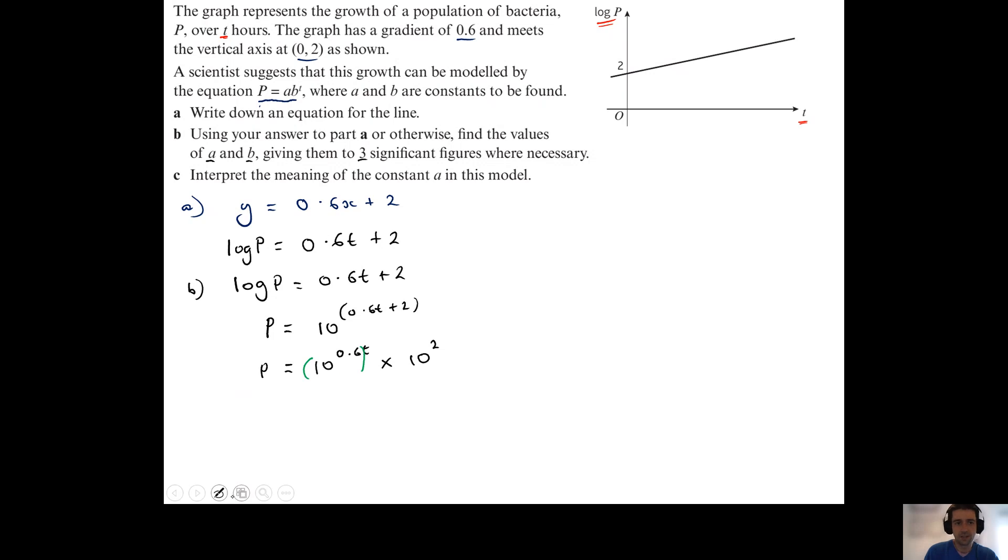So if I work out 10 to the power of 0.6 as a number, that comes out as 3.981, which I'm going to put in my bracket instead of this to the power of 0.6 to the power of t. And then 10 squared obviously is 100.